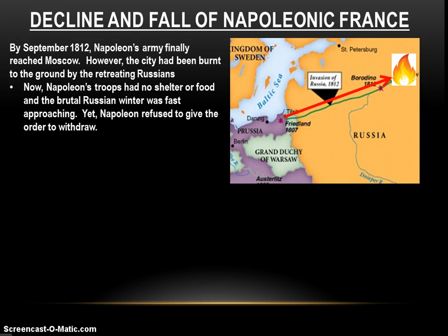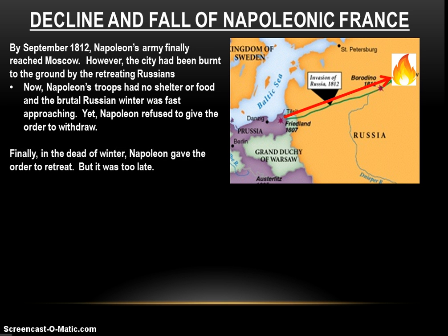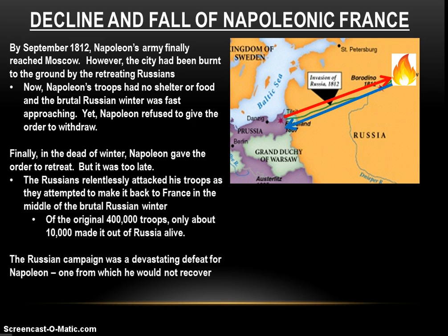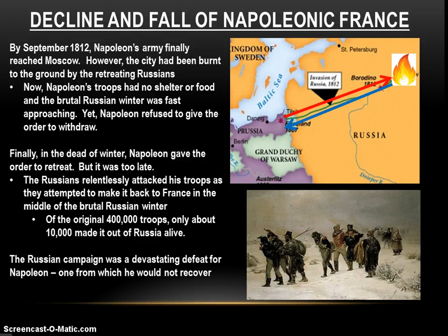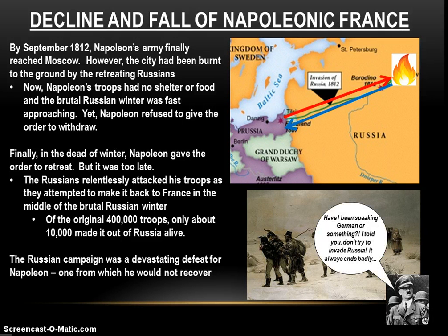By September of 1812, Napoleon's army had finally reached Moscow — but when they entered the city, they found it had been completely burnt to the ground by the retreating Russians. Napoleon's troops had no food and no shelter, with the brutal Russian winter fast approaching. Napoleon realized he had walked right into a trap, with only two options: pursue the Russians further into the interior and be swallowed by the Russian winter, or accept defeat and withdraw. Napoleon refused to give the order to withdraw and waited until finally, in the dead of winter, he gave the order to retreat. By then it was too late — his armies were freezing, starving, dying of disease, hypothermia, and starvation. As Napoleon's demoralized and broken armies began retreating, the Russians attacked relentlessly. Of the original 400,000 troops, only 10,000 made it out of Russia alive. The Russian campaign was a devastating defeat from which Napoleon would not recover.